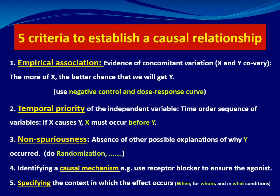The causal mechanism can be identified using, for example, a receptor blocker to confirm the effect of an agonist. If we want to make depression through stimulation of a certain receptor, we can block this receptor and compare the effect with and without blocking. Specifying the context means the effect is observed in certain groups of animals, such as western rats, male, under certain conditions and a certain model.